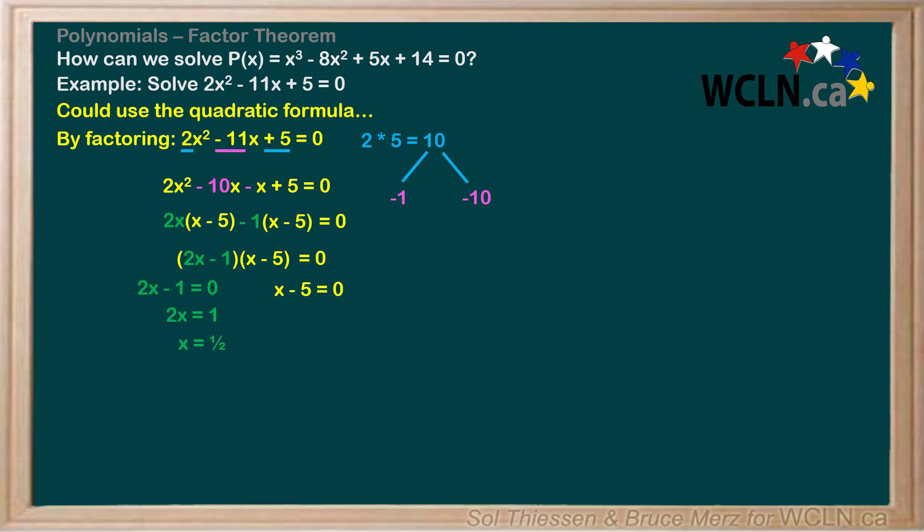Doing the same with x - 5, we add 5 to both sides to get x = 5. The two values of x that cause our polynomial to evaluate to 0 are 1/2 and 5. These are the roots of our polynomial.